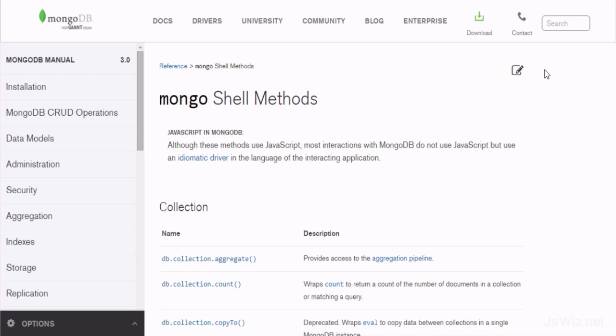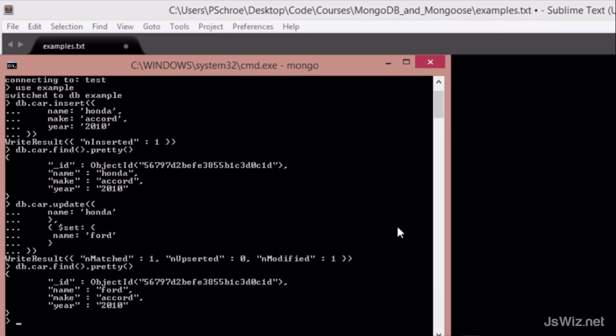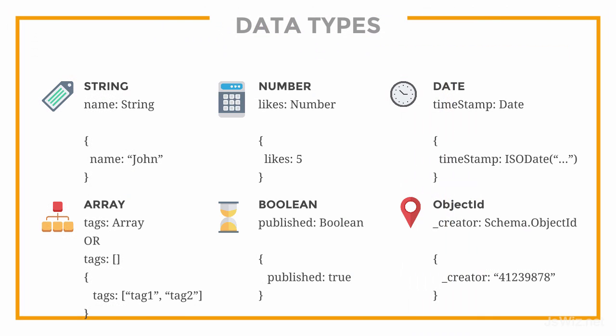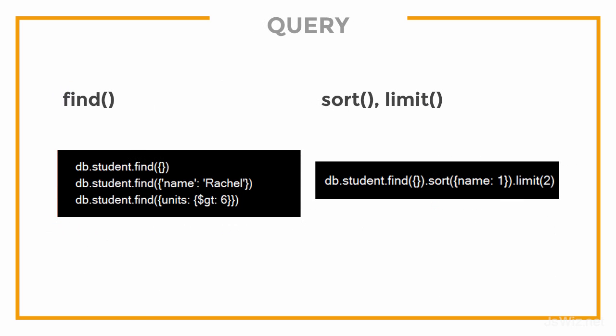After installing MongoDB, we'll dive into the shell and explore the most used command line functions in order to create, read, and update our Mongo documents. Then we'll explore the different types of data we can store within our documents. We'll finish up by discussing the various query operators we can use to drill down and extract the documents that we're looking for.